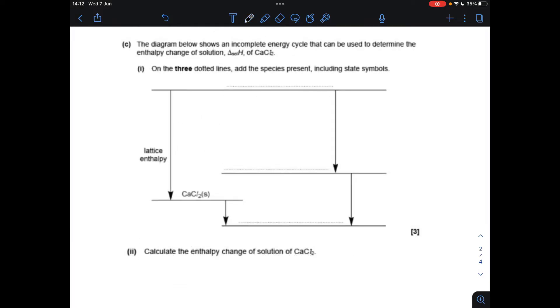Moving on to part C, so we've got to populate the dotted lines with the species present and include state symbols. So I'll start on the top line here, so we've got our gaseous ions here, so obviously that's Ca²⁺ gas and 2Cl⁻ gas. Go down to the bottom next, so what have we got on here, we've got the aqueous ions.